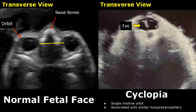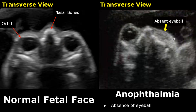Cyclopia occurs in a severe case of holoprosencephaly. In cyclopia, there is only a single midline orbit which contains either one or both eyes — we can only see a single orbit in the midline. Anophthalmia refers to absence of the eyeball; in this transverse view, we can only see one eyeball.